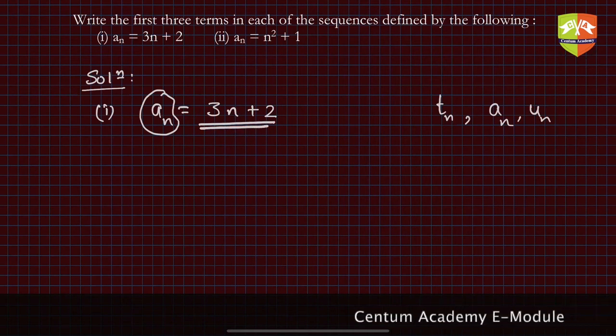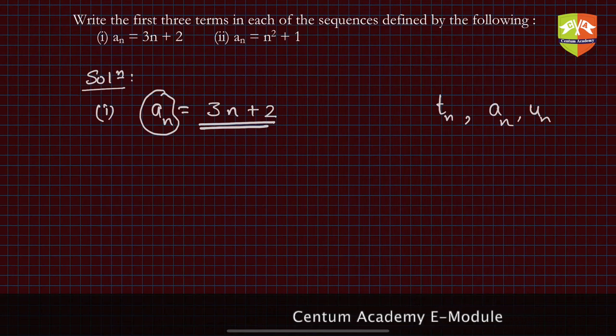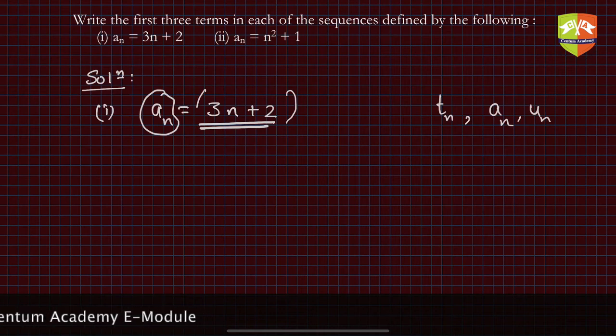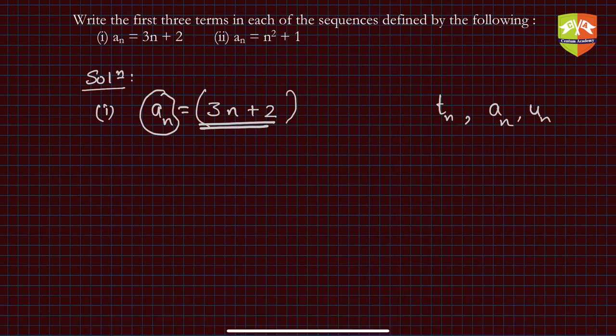There are different types of sequences and one type is where every nth term can be expressed as a linear polynomial. A linear expression would be a better term because n is just an integer, or rather n is only positive integers.